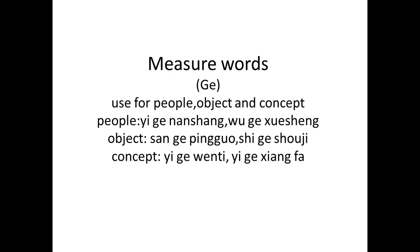So to summarize: we use 个 (gè) for any person, object that doesn't already have a measure word, and for any concept. For example, two books — 两个书 (liǎng gè shū) — wait, 书 (shū) already has its own measure word, so we would not use 个 for that. But for sisters, brothers, or a girl — these are people, so we use 个 (gè) for them.